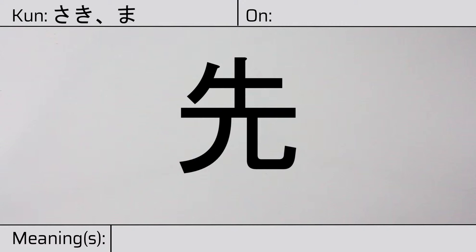And it has an onyomi or Chinese reading of sen. This character has the meanings before, ahead, previous, future, or precedence.